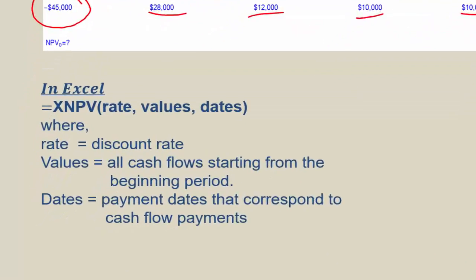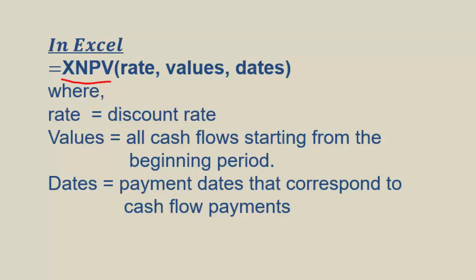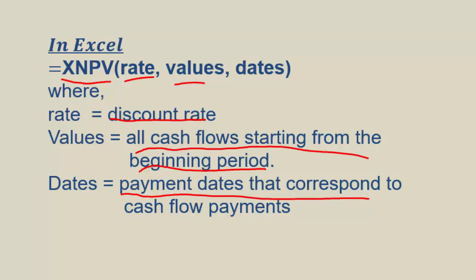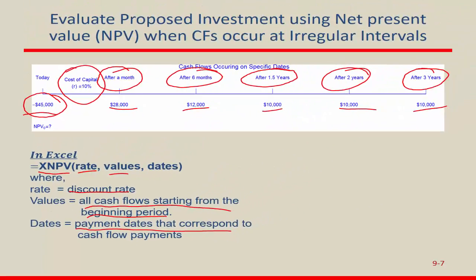Excel has a function called XNPV for irregular cash flows at unequal time intervals. The rate here is just the discount rate — the cost of capital as an APR, no adjustment needed. Unlike the regular NPV function, when you use XNPV, the values include all cash flows starting from the beginning period, including the initial outflow. You also supply the payment dates — the specific date each cash flow occurs. So XNPV takes three arguments: rate, values (all cash flows), and dates.